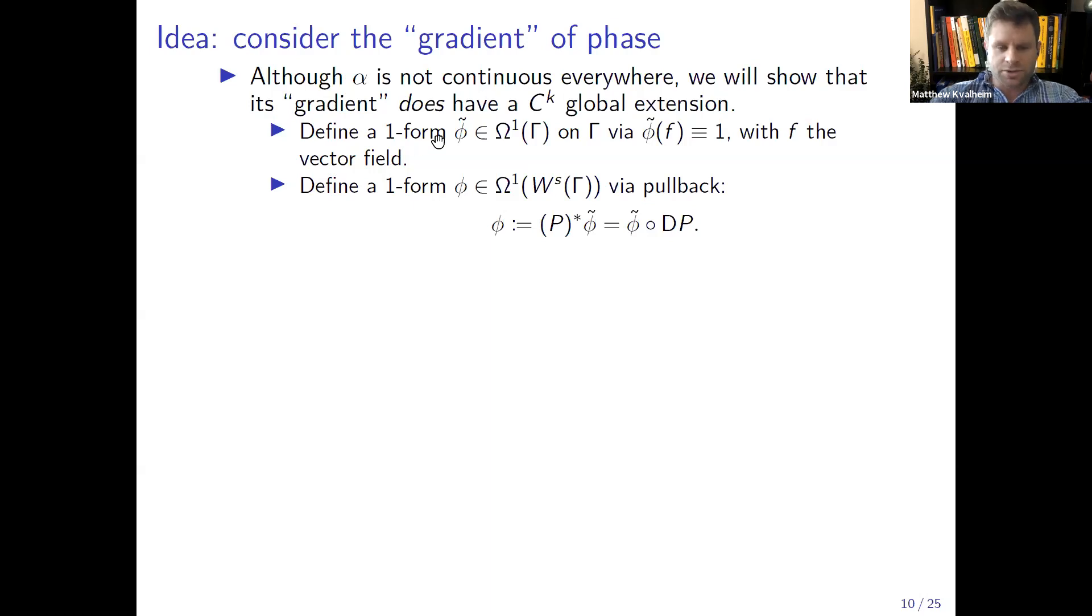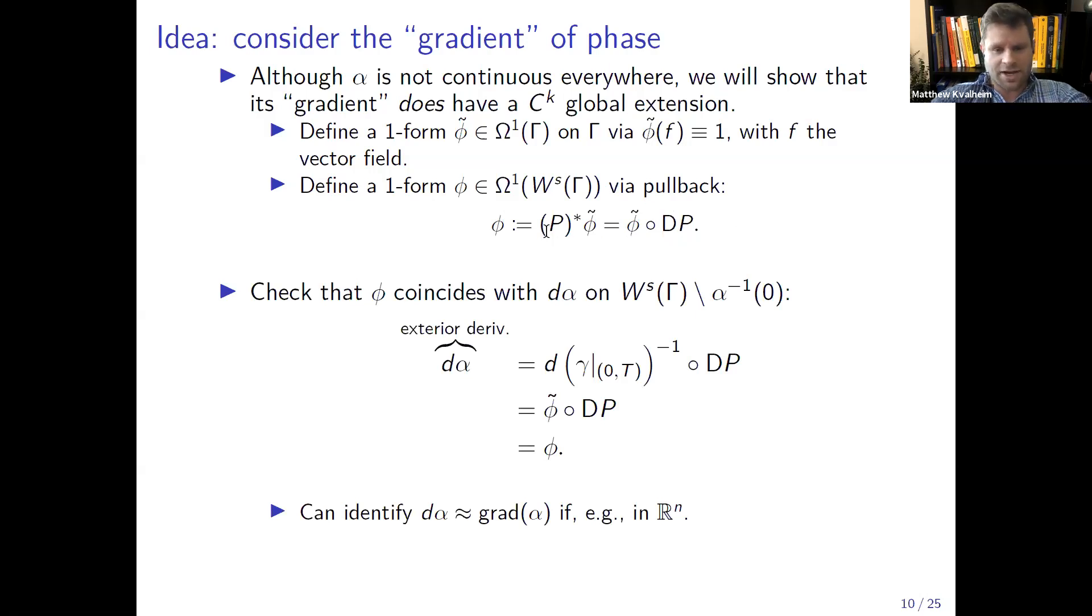So okay, although our real valued asymptotic phase is not continuous everywhere, its gradient amazingly enough does have a smooth global extension. So I claim that this is one way to define this global extension. The first step is just on the limit cycle itself, which is one dimensional, define a one form. One way to think about one forms is they're dual to vector fields, so they're gadgets which take in a vector field, eat it and spit out a number. On the limit cycle itself define a one form φ tilde such that when it eats the vector field it just gives you one everywhere. Because the limit cycle is one dimensional this uniquely defines φ tilde.